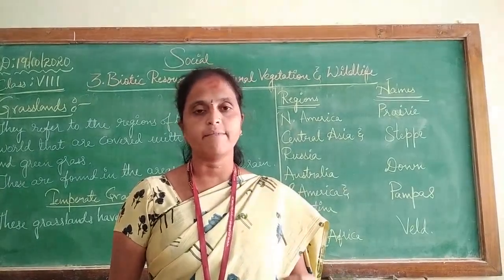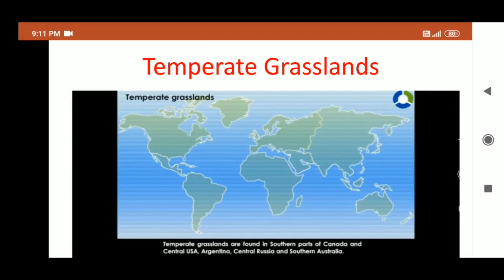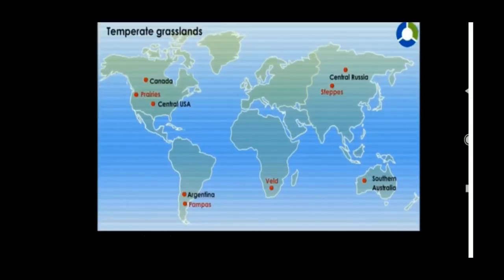Now we will learn about the characteristics, vegetation and wildlife of the temperate grasslands. These are found in the temperate regions — in the southern part of Canada, Central Asia, Argentina, Central Russia and Southern Australia. These grasslands are known by different names in the different continents: prairies in North America, pampas in Argentina, veld in South Africa, steppes in Russia.